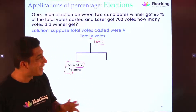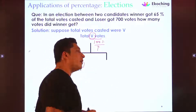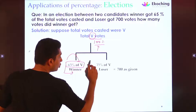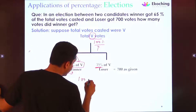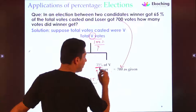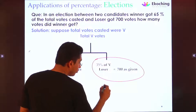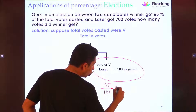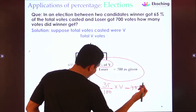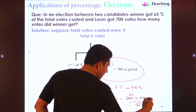So we can write: 35% of V = 700. Solving for V: V = 700 × 100 / 35 = 2000. But wait — is 2000 our answer? No. The question asks how many votes the winner got, not the total. So we need 65% of V = 65% of 2000 = 1300. The answer is 1300 votes.